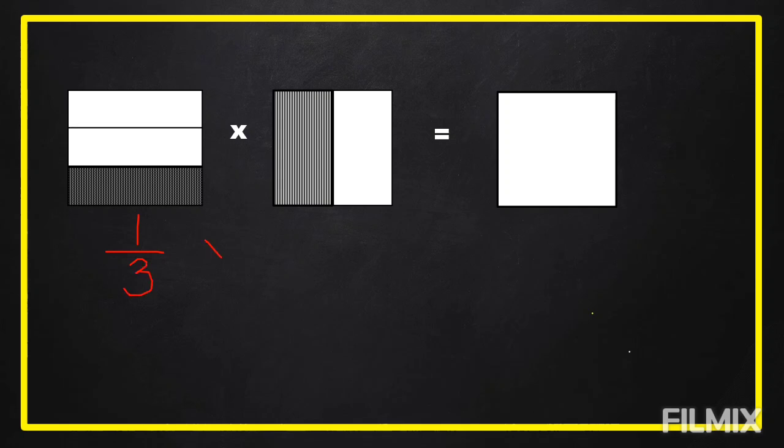Then, we are going to multiply this to the second figure. The second figure has one shaded part and there are two equal parts. So, this is one-half.